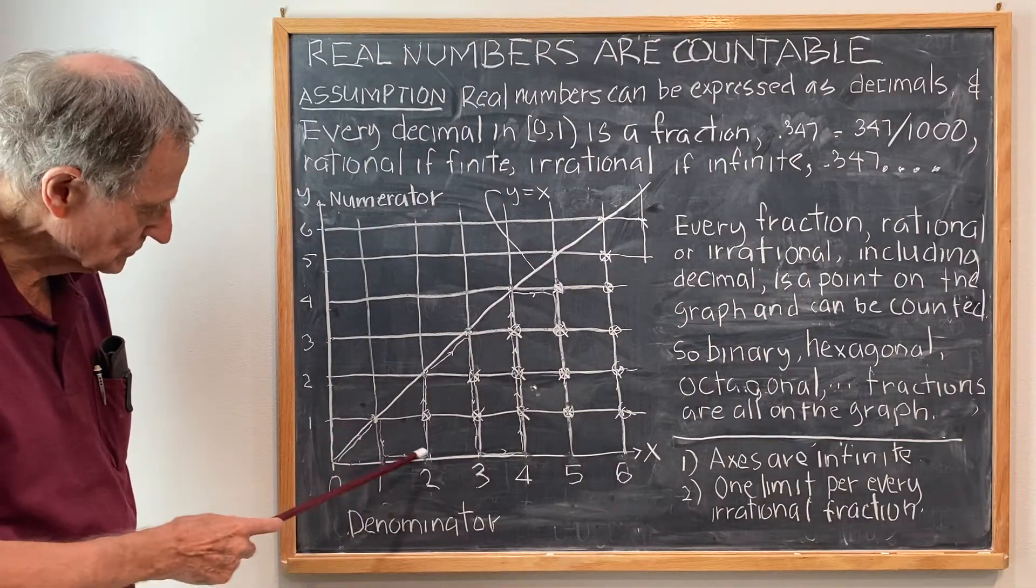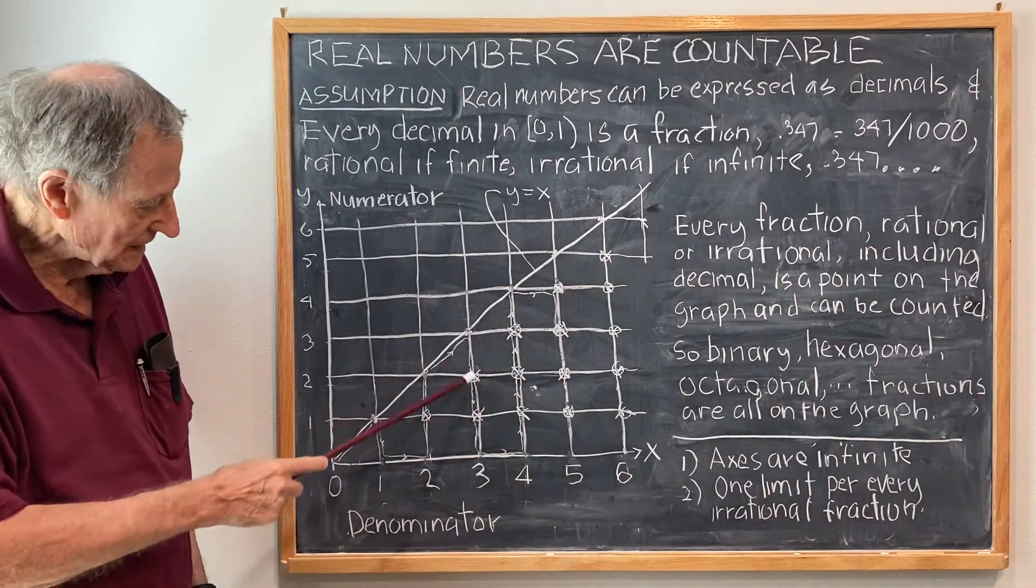For example, I go 0, 1, 2, 3, 4, 5, 6, 7, 8, 9, 10, etc.